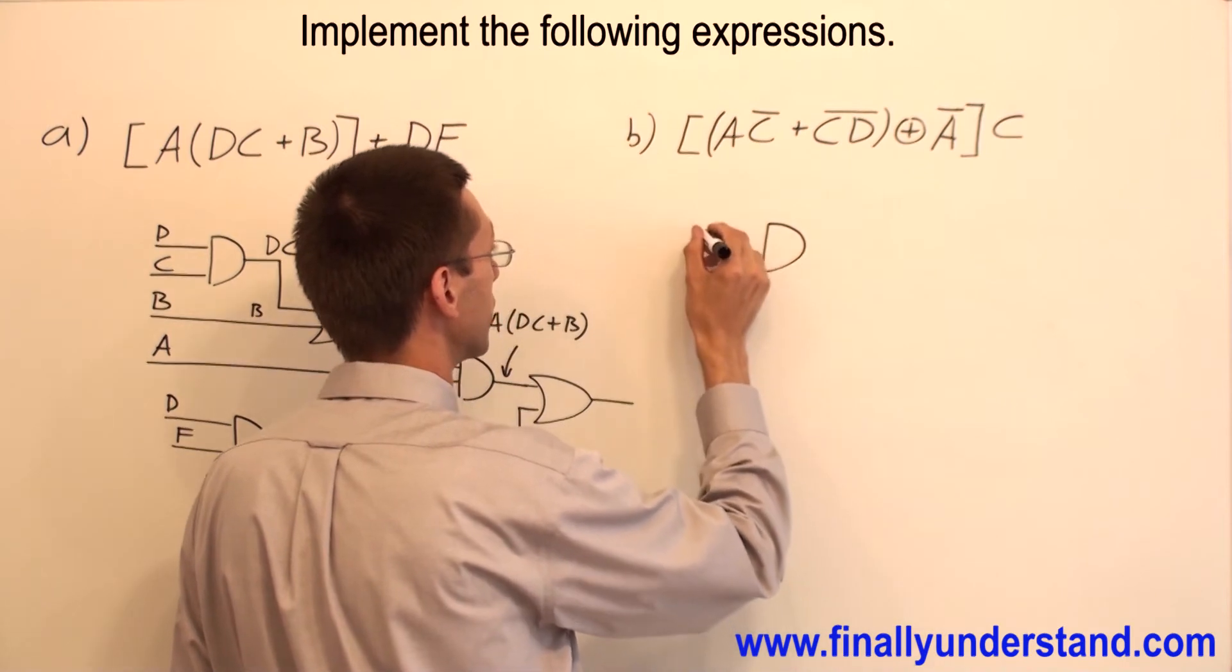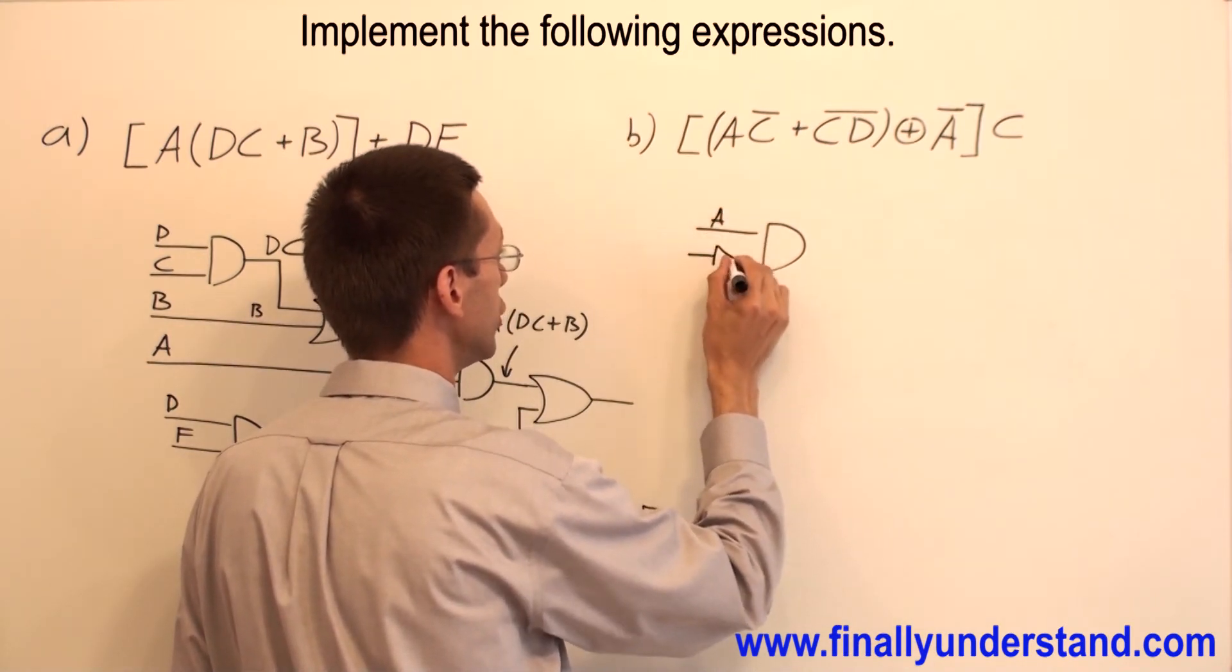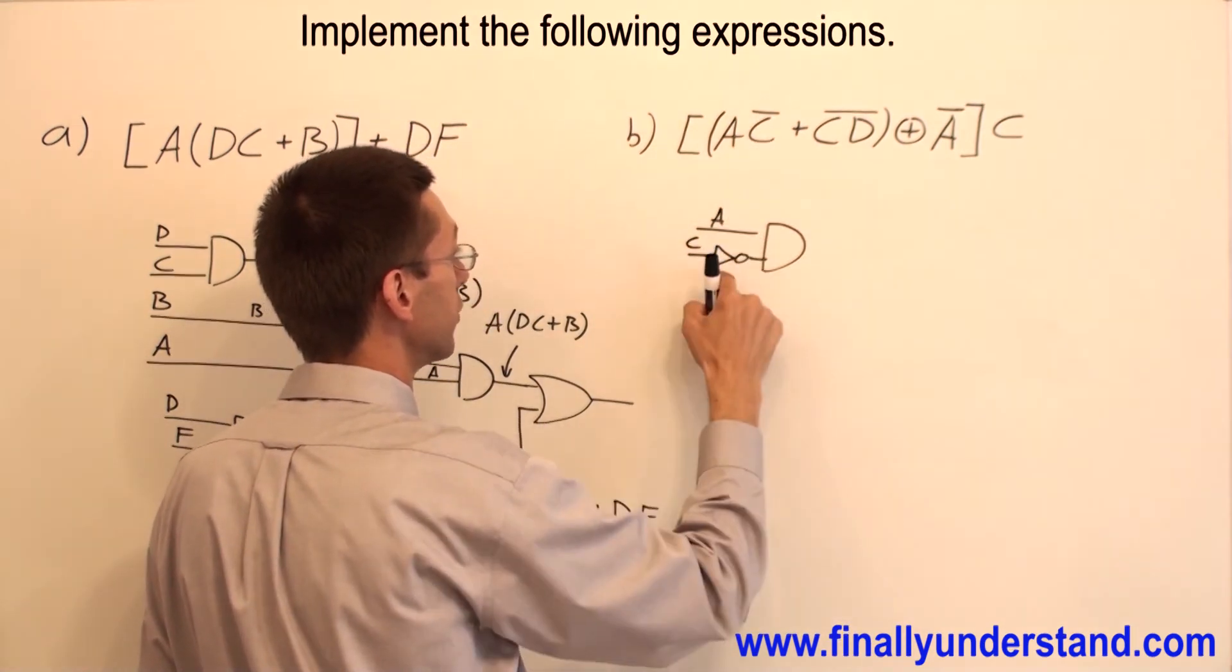I have an AND gate, input A, and I have C NOT, because I have a NAND gate, because I have a bar over here. That's why I have an Inverter over here.